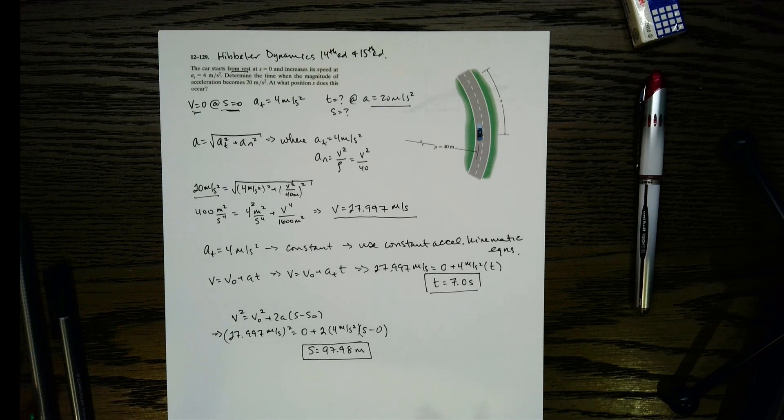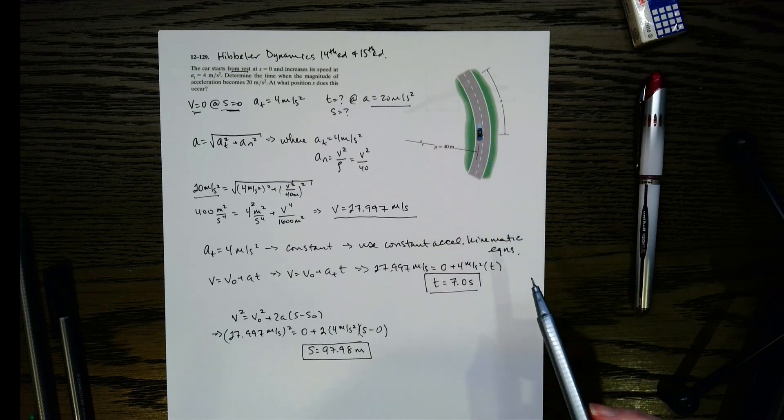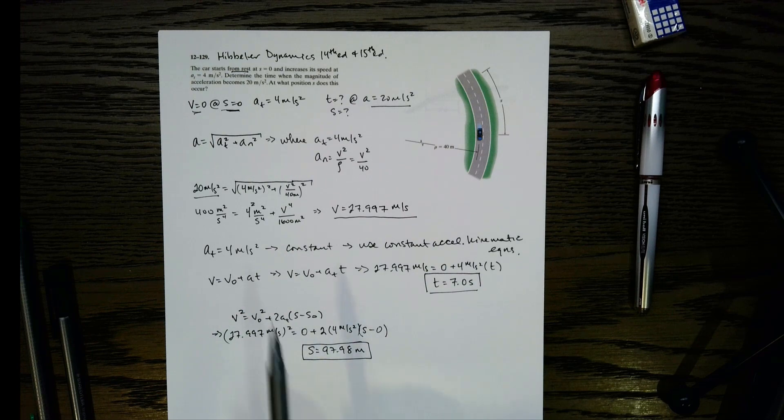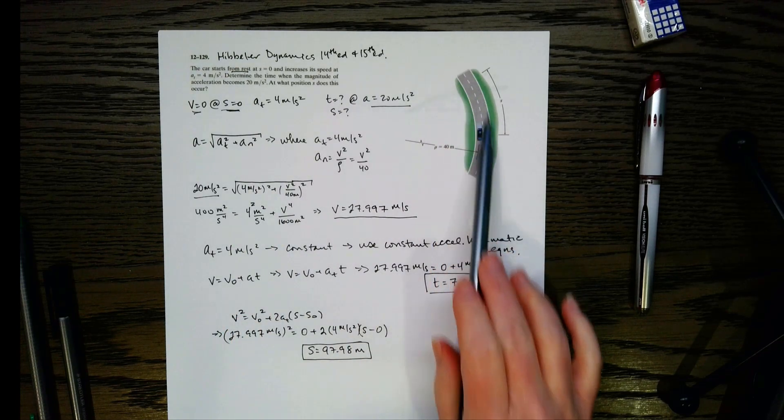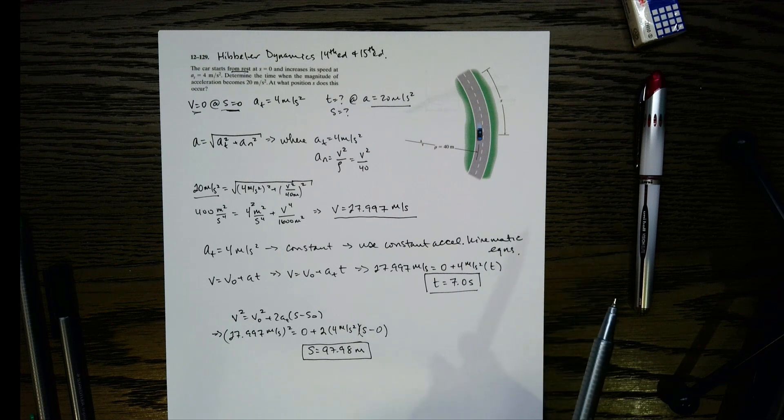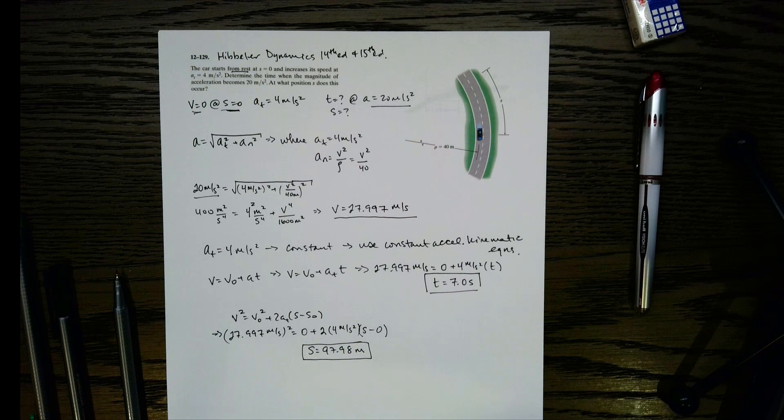So on these problems, don't forget about these equations here. A lot of students forget about those. They haven't disappeared just because we're in a new section. You can still use them. The key, though, is to remember that this acceleration in these equations is your a sub t. This a sub n is brought about just from the curvature of the path. So there you have that one. Hopefully that was helpful.